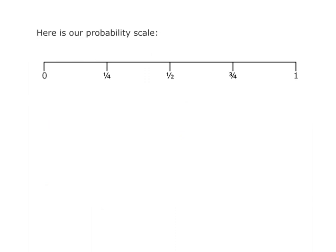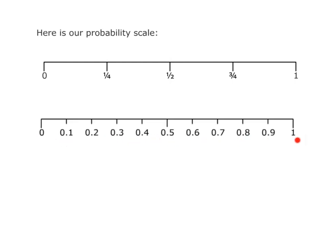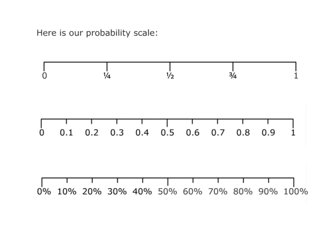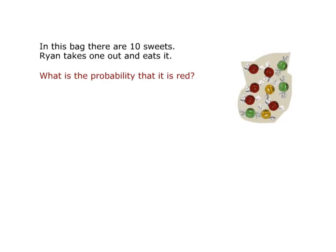Here's our probability scale written from zero to one. Zero is the chance of something being impossible; one is the chance of something being certain. I've used fractions in between to describe the even chance, the unlikely, and the likely. But as we know from studying Numbers Paint a Thousand Words, we can write them in fractions, but also in two other ways. Another way is using decimals — I still have my zero, my one, and my half, and in between would be my decimals. You can also use your probability scale in percentages, going from zero to 100%.